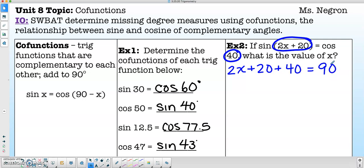Now in this fashion, I'm just going to combine like terms and solve algebraically. So this will become 2x plus 60 is equal to 90.